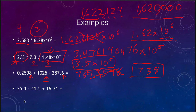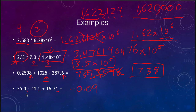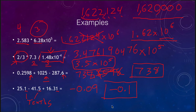One more example: adding and subtracting three numbers gives negative 0.09. We look at where each number ends — two end at the tenths place, one ends at the hundredths place. We round to the tenths place, giving negative 0.1 as our answer in the correct number of significant figures.